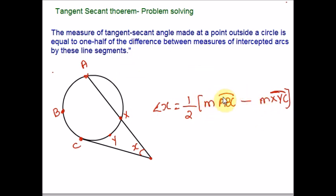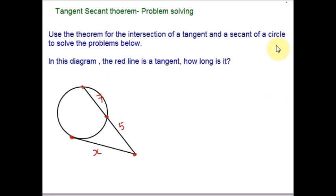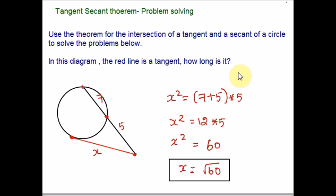Please look at this example. Use the theorem for intersection of a tangent and secant of a circle to solve the problems below. In this diagram, the red line is a tangent. So we can apply the formula. x squared, the length of the tangent squared, would be the entire one multiplied by this one. Let us simplify it further. 12 times 5 is 60. Taking square root on both sides, x equals square root of 60.